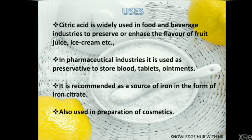Uses of citric acid: citric acid is widely used in food and beverage industries to preserve or enhance the flavor of fruit juices, ice creams, etc. In pharmaceutical industries, it is used as a preservative to store blood, tablets, and ointments, and is recommended as a source of iron in the form of isocitrate. It is also used in the preparation of cosmetics. Citric acid can be utilized as an agent for the stabilization of fats, oils, and ascorbic acid, and is used as a stabilizer of emulsion in the preparation of cheese. Overall, citric acid is very useful.